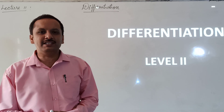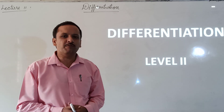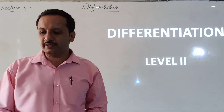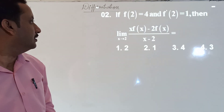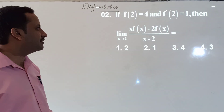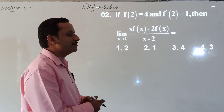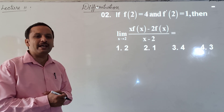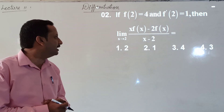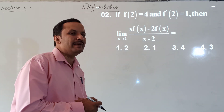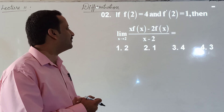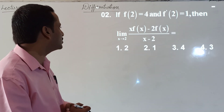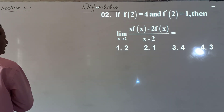Dear students, today let's solve problems of differentiation level 2. Let's look at the first question — which is actually question number 2. If f(2) = 4 and f'(2) = 1, then the limit as x→2 of [x·f(x) − 2·f(x)] / (x − 2) is equal to 4.